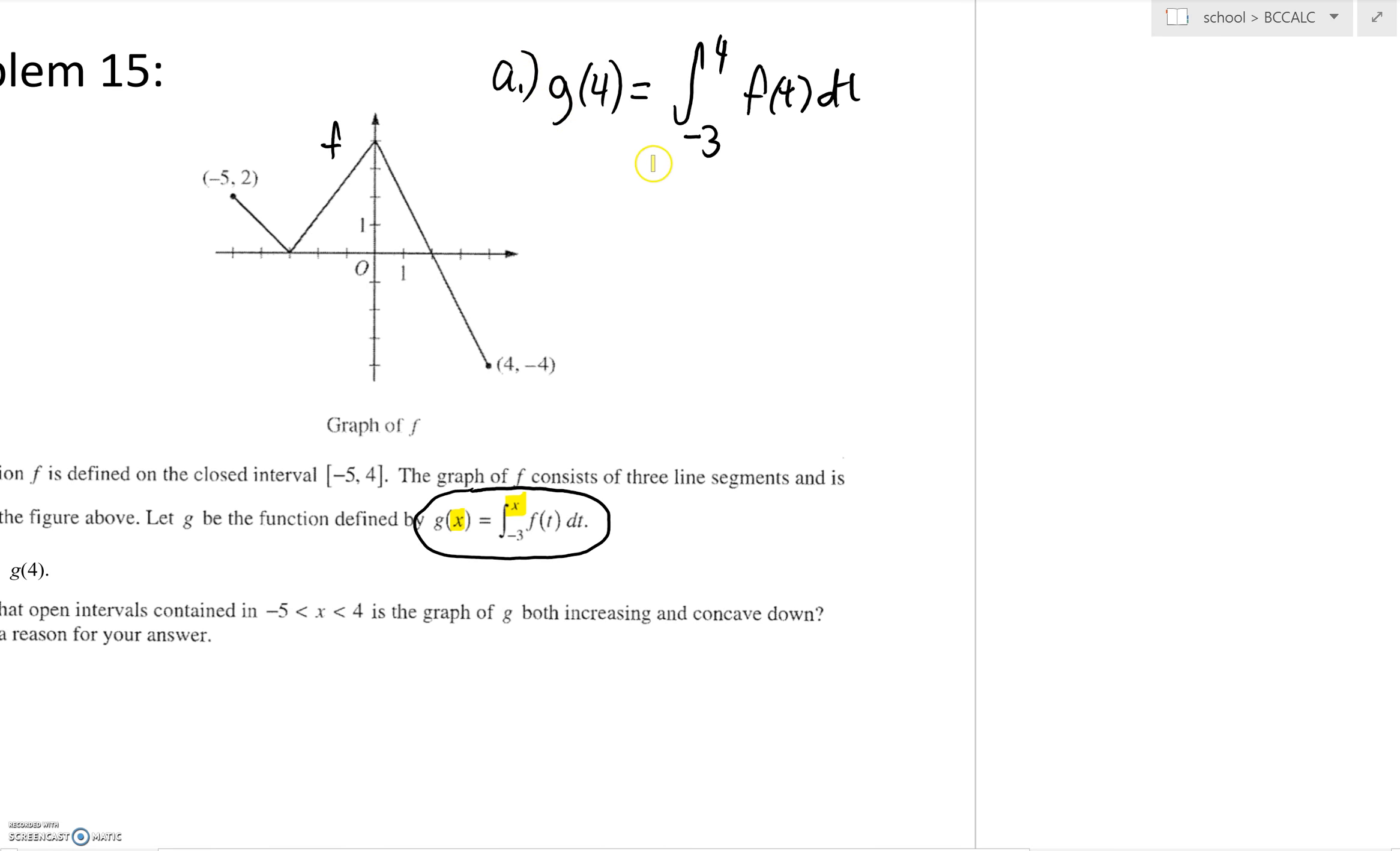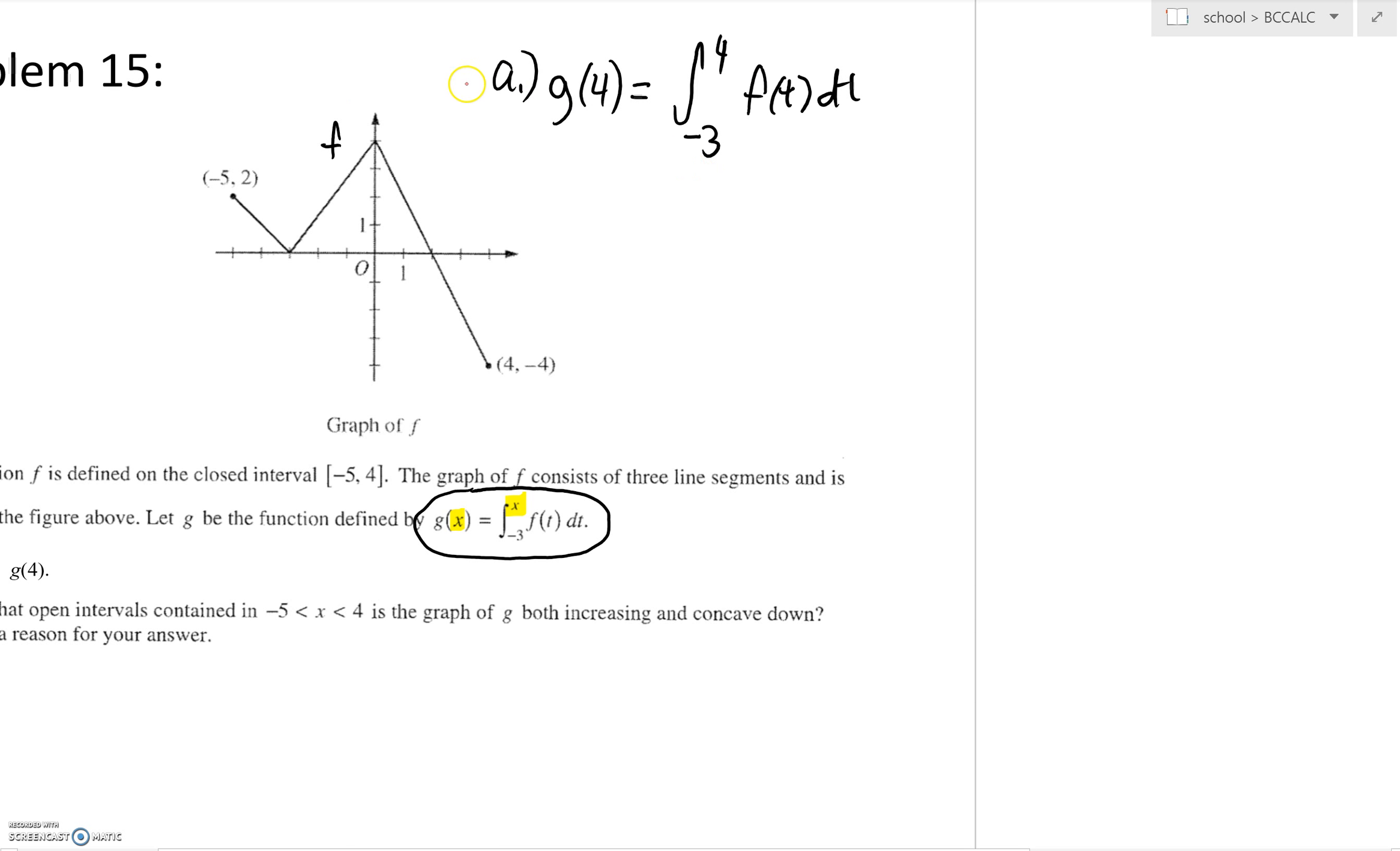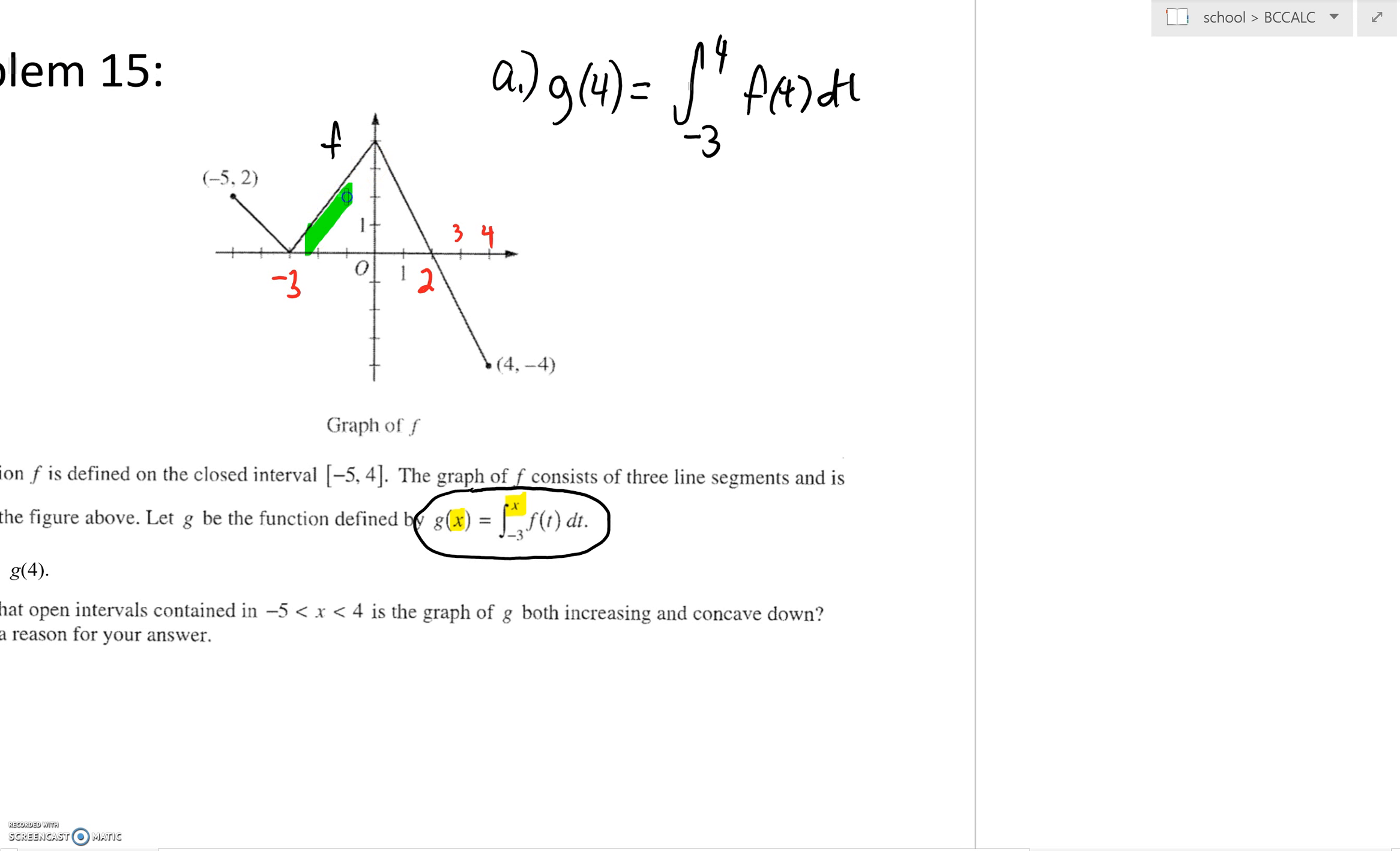This integral is net area, and we can find the net area in this figure. Negative 3 is right over here, 2 is this way, then here's 3 and here's 4. I hope you can see that we're going to have a triangle that's above the x-axis.